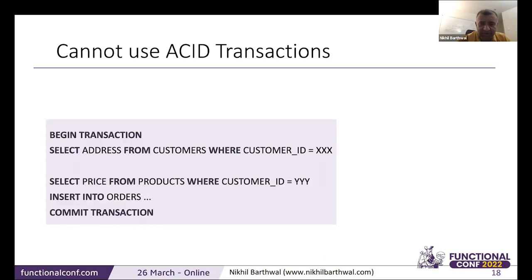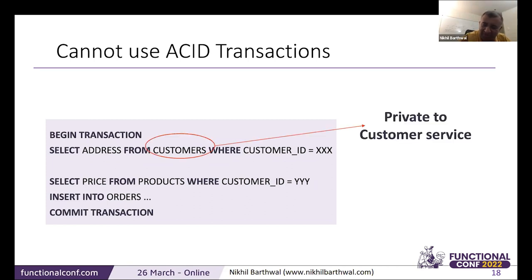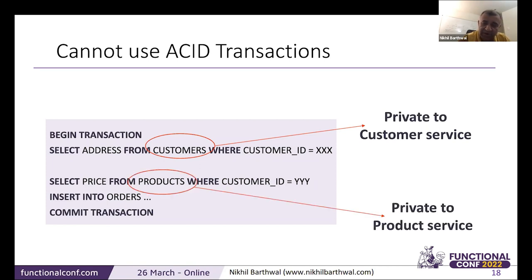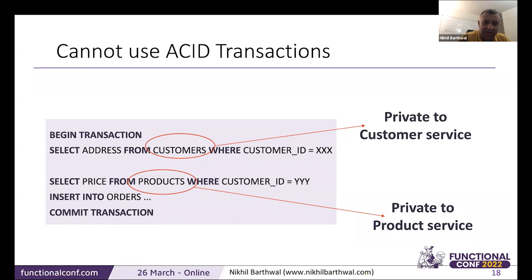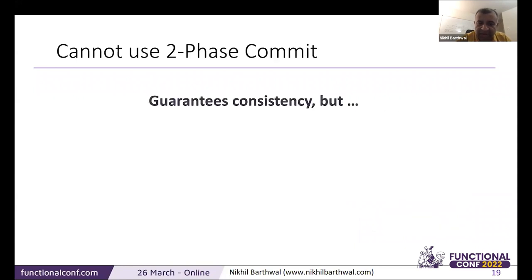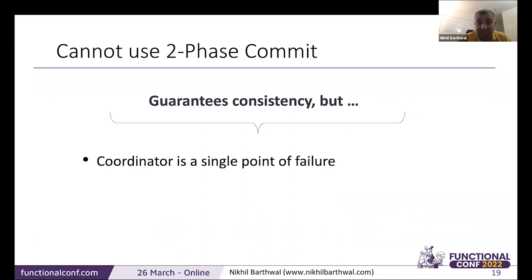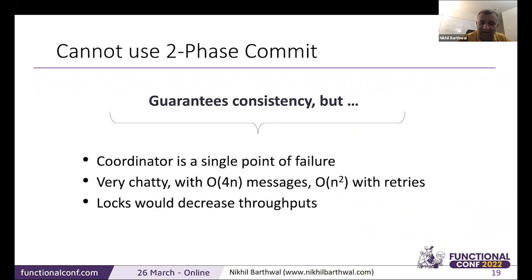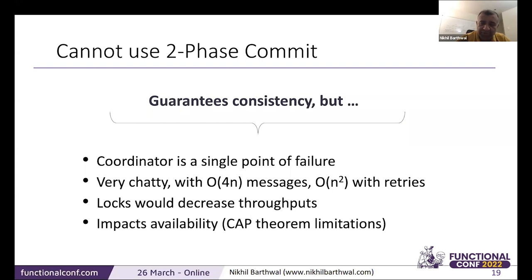We can't use ACID transactions because in a microservice, each database is private to its service — the customer service can't directly access the product service database. You really cannot run a cross-service SQL query. You can't even do a two-phase commit because, while it guarantees consistency, the coordinator is a point of failure, it's very chatty, and locks decrease throughput. In a fast-moving service environment, two-phase commit is usually not an option.